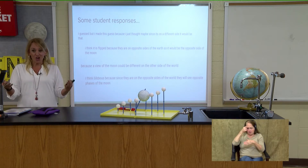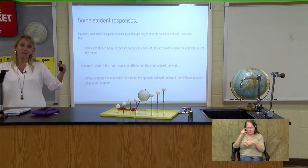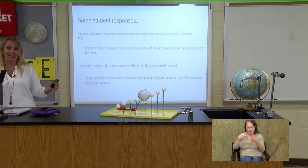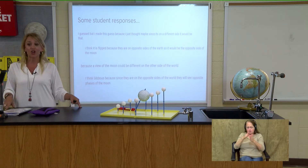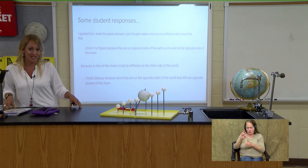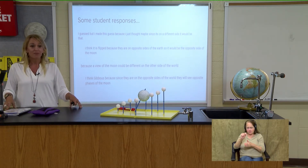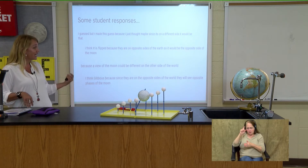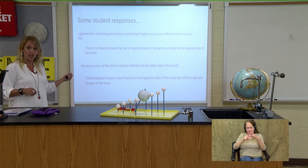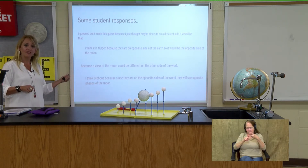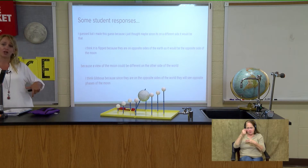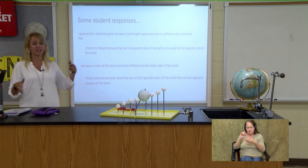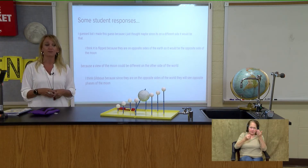When I compiled this data, the majority of the students said they think it's a crescent moon — that it's going to be the same moon. And then the second most popular answer was that they think it's a gibbous moon: if it's crescent on this side of the Earth, then it's going to be gibbous on the other side of the Earth.